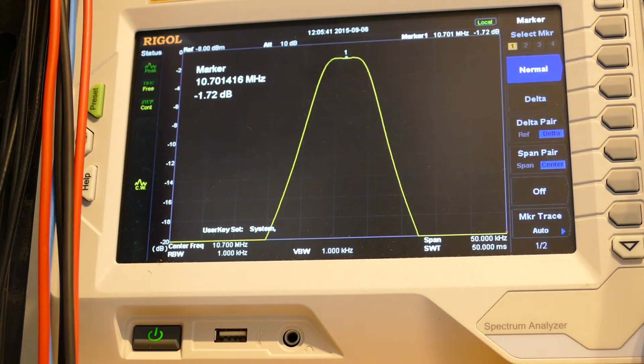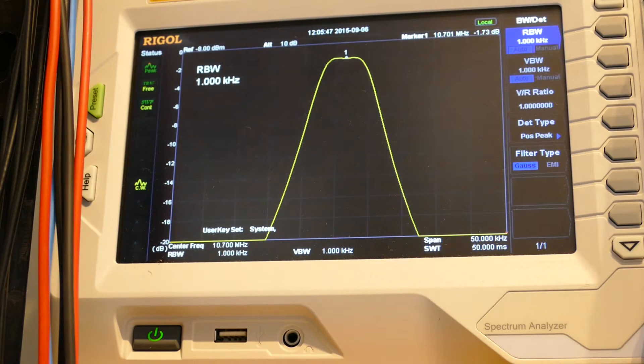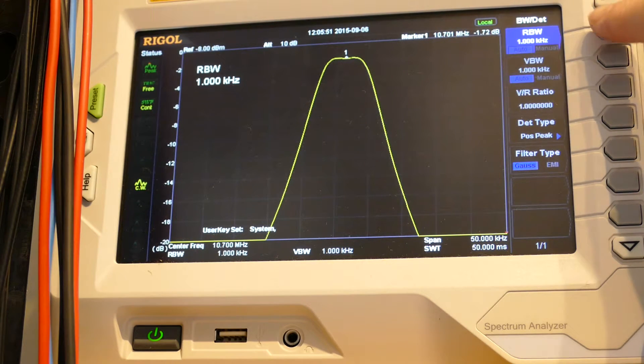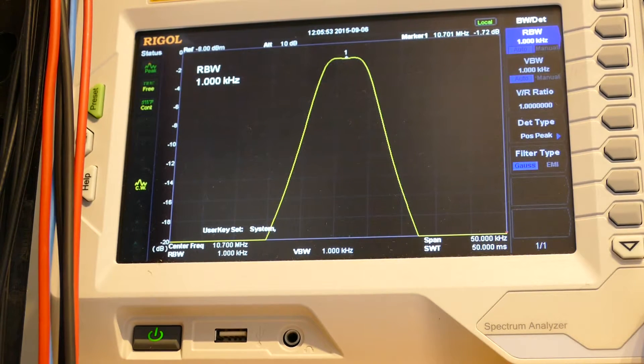Also mentioned in the EEV blog forum about this - is it to do with the receiver bandwidth? Currently it's set to auto which is the default setting when I set this span. Let's see what happens.